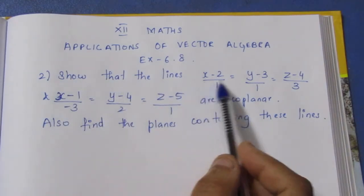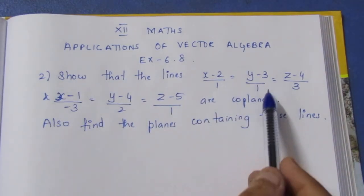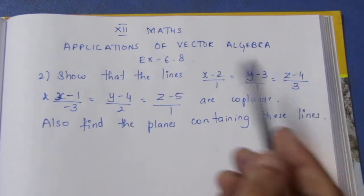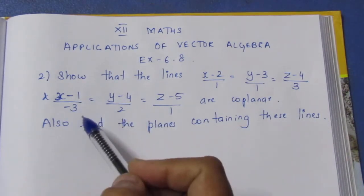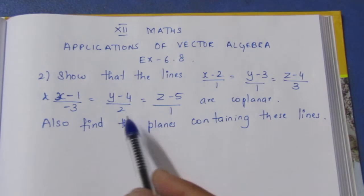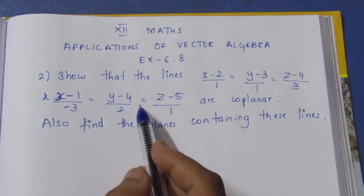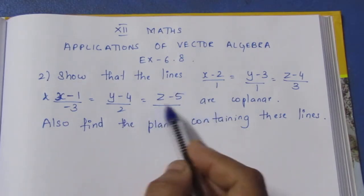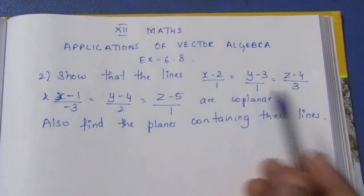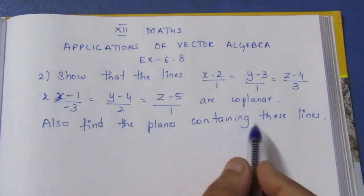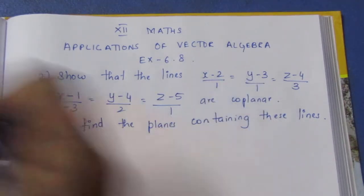Show that the lines (x-2)/1 = (y-3)/1 = (z-4)/3 and (x-1)/(-3) = (y-4)/2 = (z-5)/1 are co-planar. Also find the equation of the plane containing these two lines.